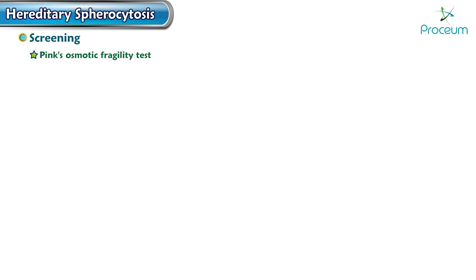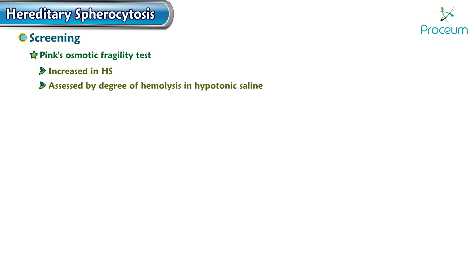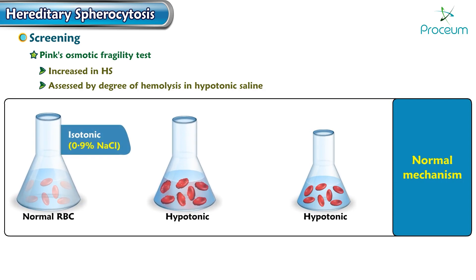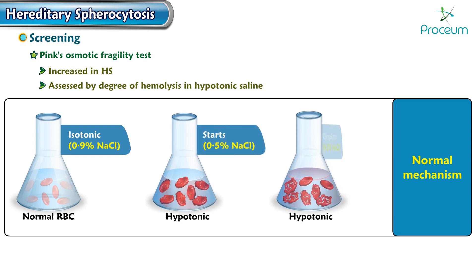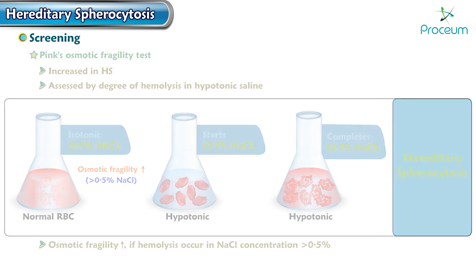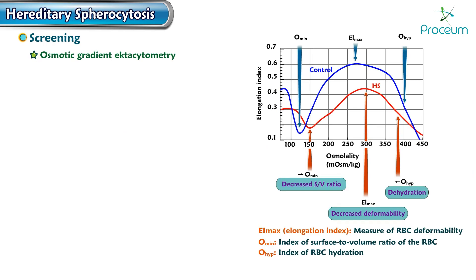Screening is performed by the Pink's osmotic fragility test. Osmotic fragility will be increased in hereditary spherocytosis, assessed by the degree of hemolysis in hypotonic saline. Normal RBCs are isotonic with normal saline; they lyse at half-normal saline, and lysis is complete at 0.3% normal saline. Osmotic fragility is increased if hemolysis occurs at saline concentrations greater than 0.5%.